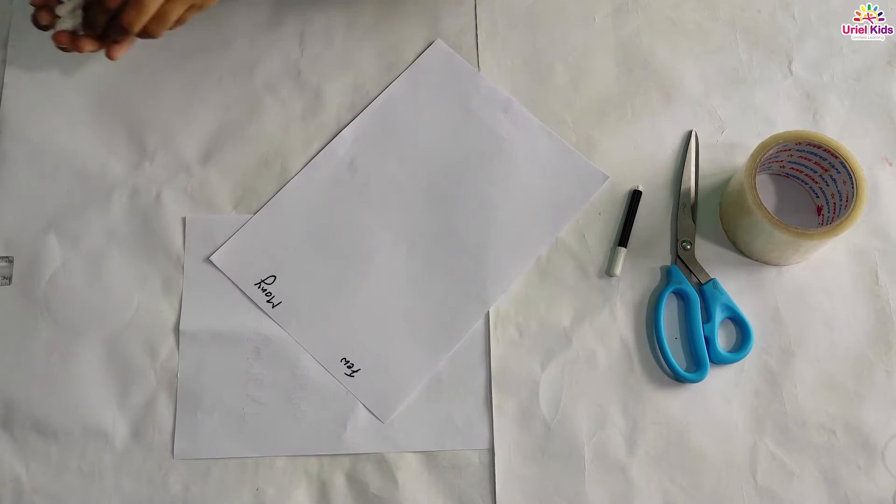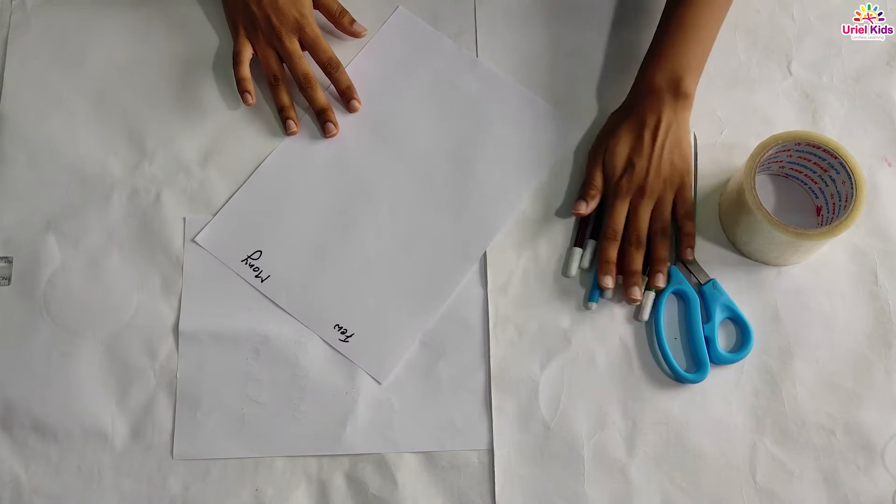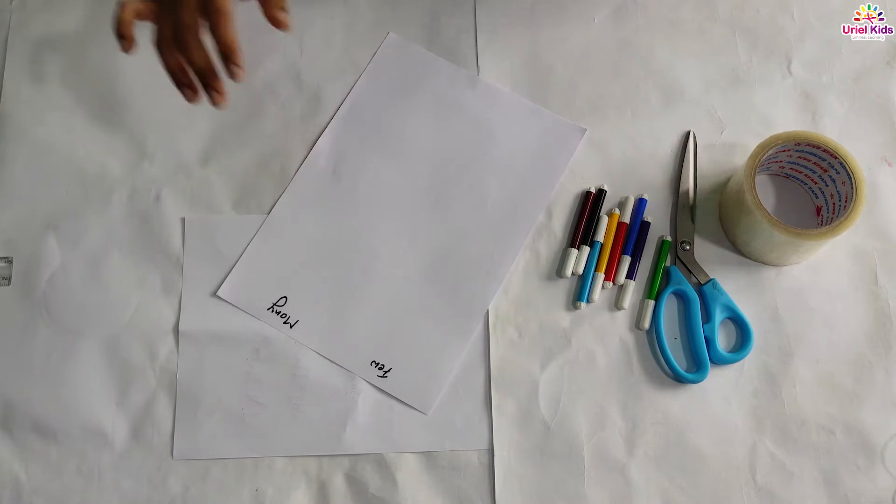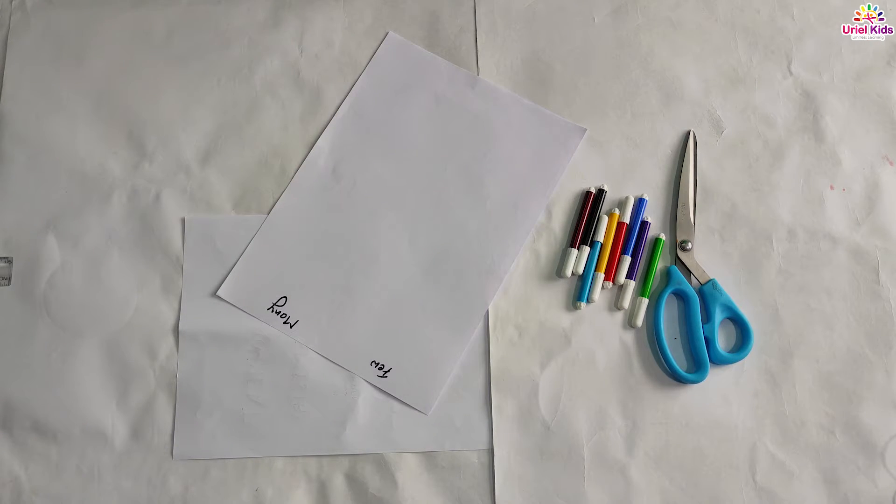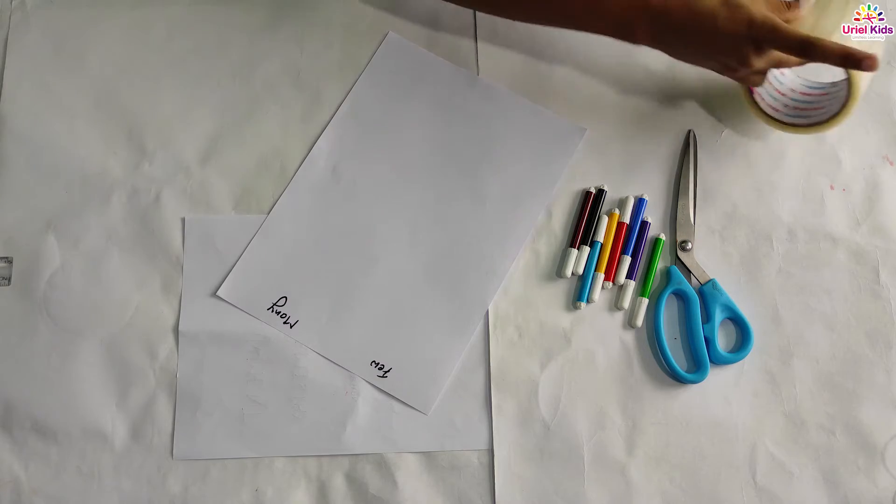So for example, we have done and understood the concept with so many things. Today I am going to take maybe these small color sketch pens. And what I'm going to do is in the few and many I'll be going to stick some of the sketch pens so that just by seeing the column of few and many, the child will understand that these things are few in number and the remaining things are many in number.